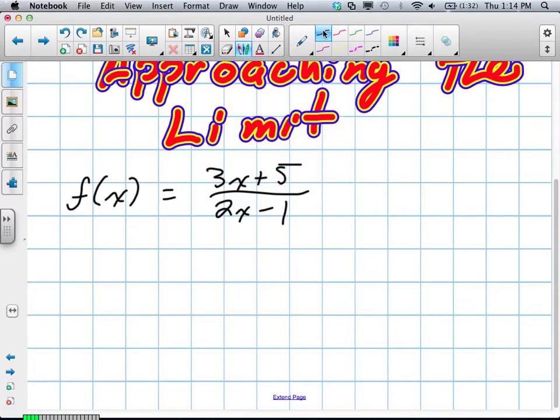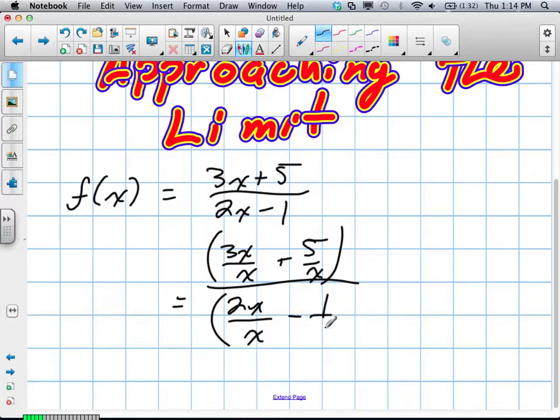Well, it turns out our greatest term on the top is x. So we're going to take 3x divided by x plus 5 divided by x, divided by 2x. x is the greatest term on the bottom also, and 1 divided by x.